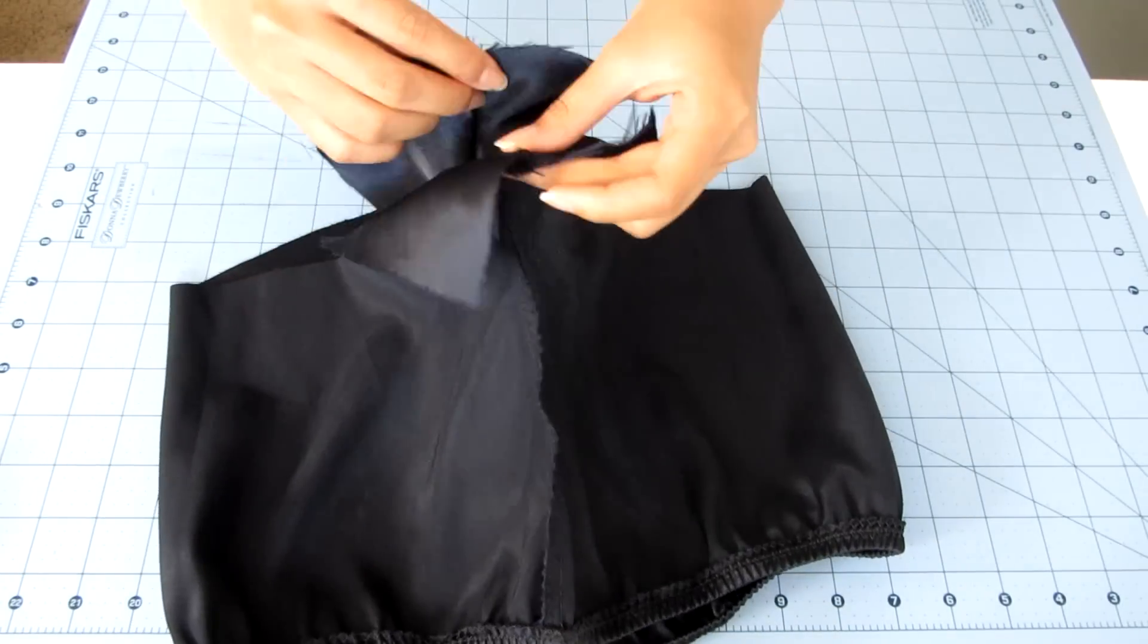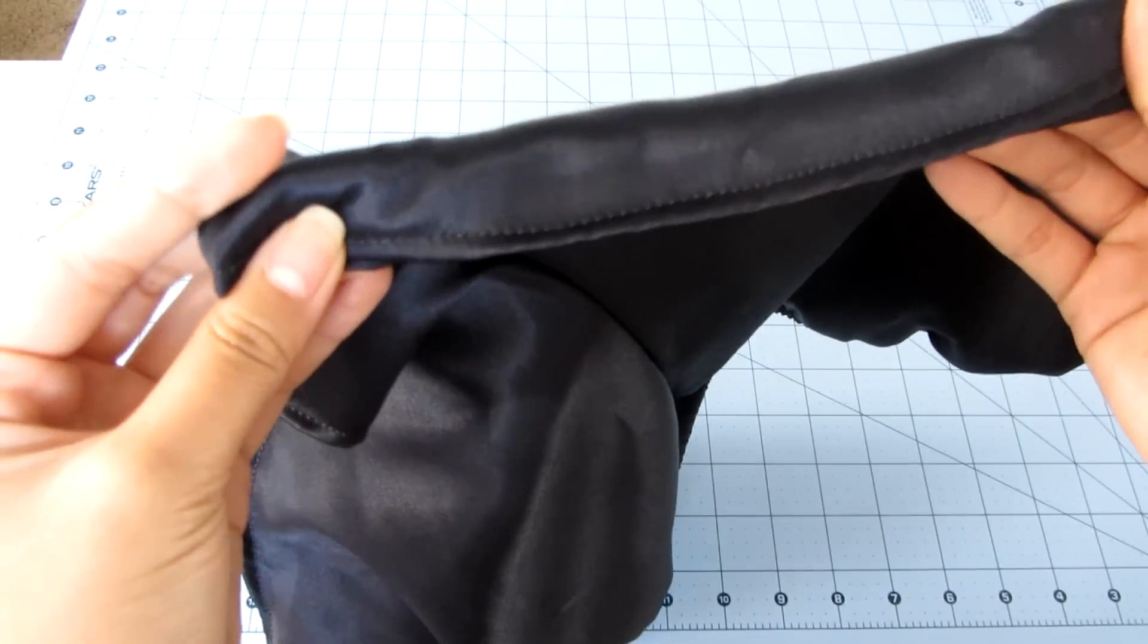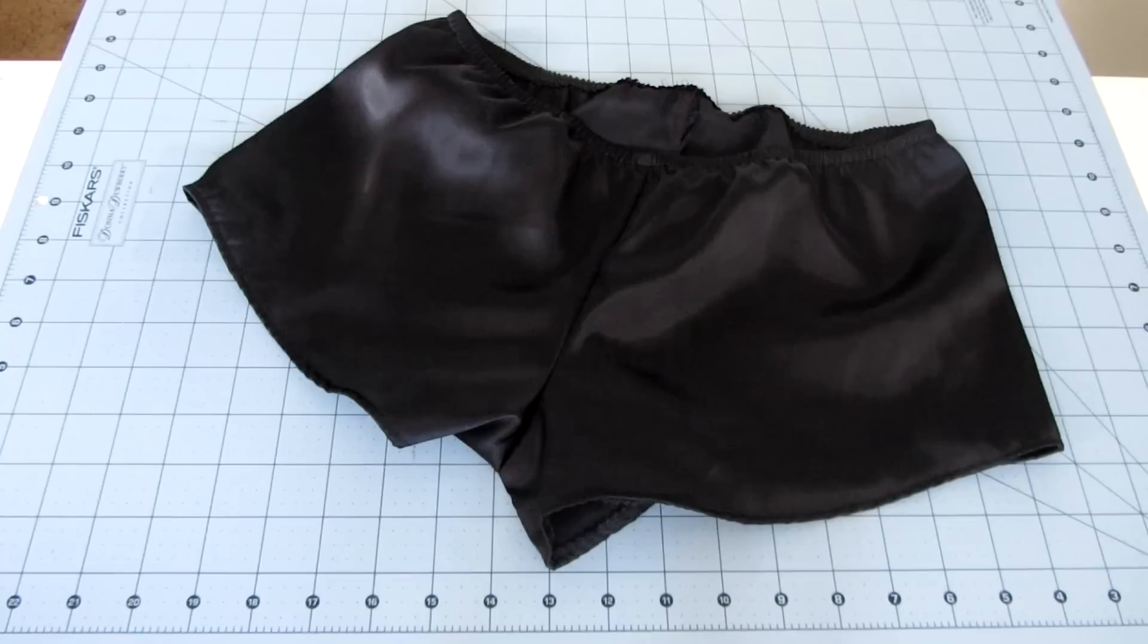Then sew the crotch part and sew a zigzag stitch on the seam allowance to prevent fraying, and then hem the leg holes the way we hemmed the cami.